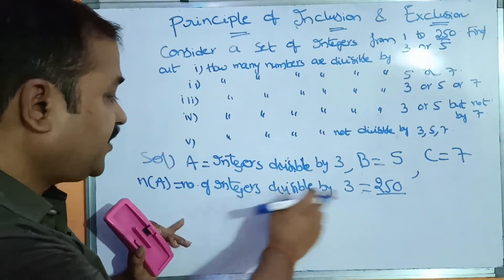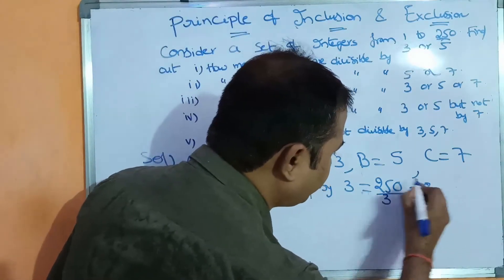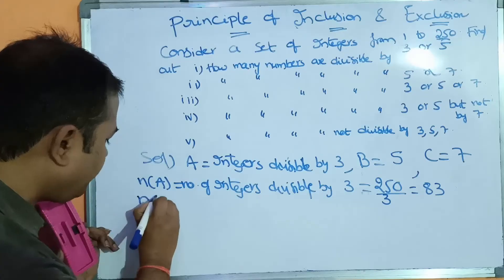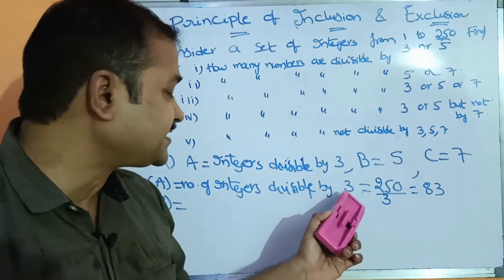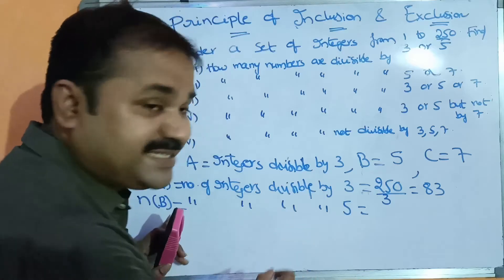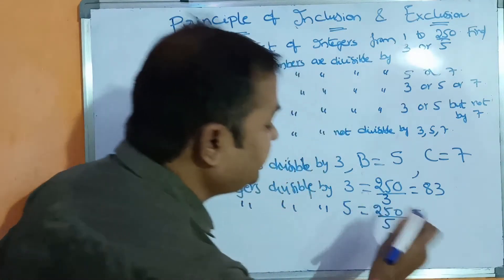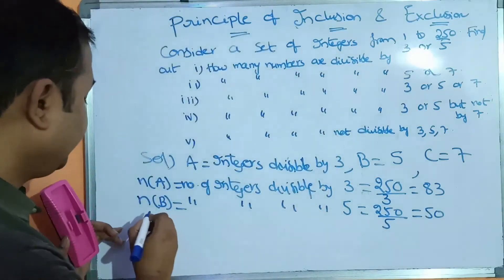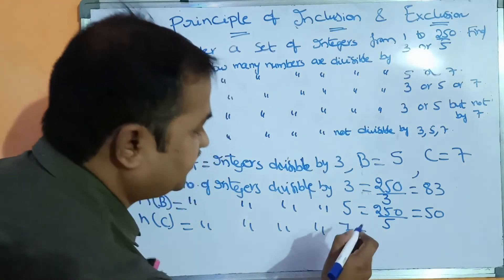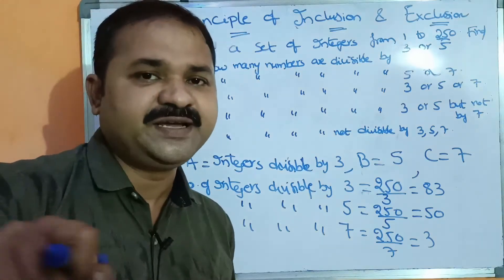The number of integers divisible by 3 is floor(250/3). 3 goes into 250 giving 83 (ignoring the fractional part), so n(A) = 83. Likewise, n(B) is the number of integers divisible by 5, which is 250/5 = 50. And n(C) is the number of integers divisible by 7, which is floor(250/7) = 35.